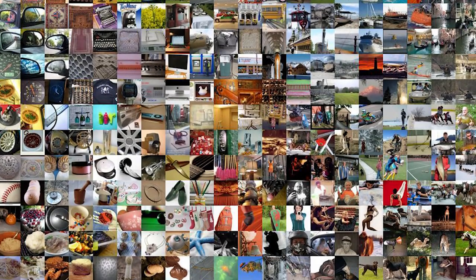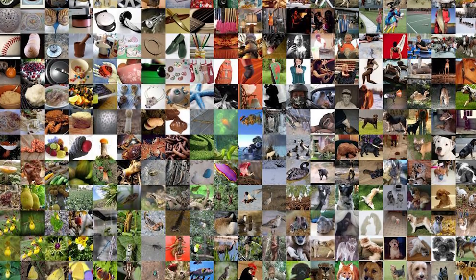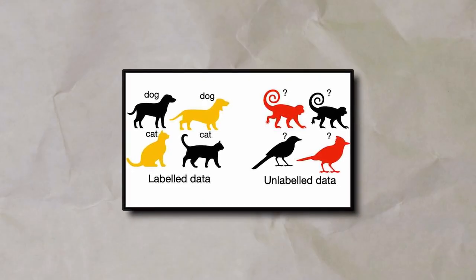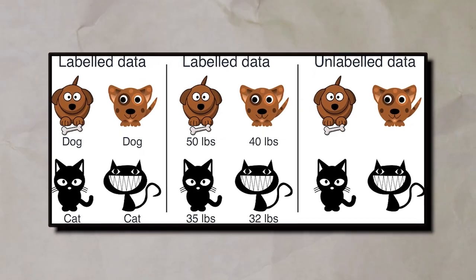The excitement doesn't end there. Mage also wows us with its tenacity in handling limited labeled data. With just 10 labeled examples from each class, it still manages to attain an astonishing 71.9% 10-shot accuracy rating. And Mage isn't just limited to the gigantic ImageNet dataset. It can scale up and handle any unlabeled image dataset with ease. Imagine its potential in emerging technologies where labeled data might be scarce.